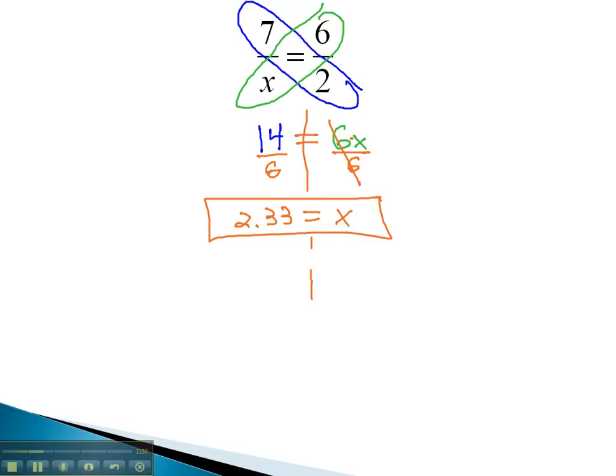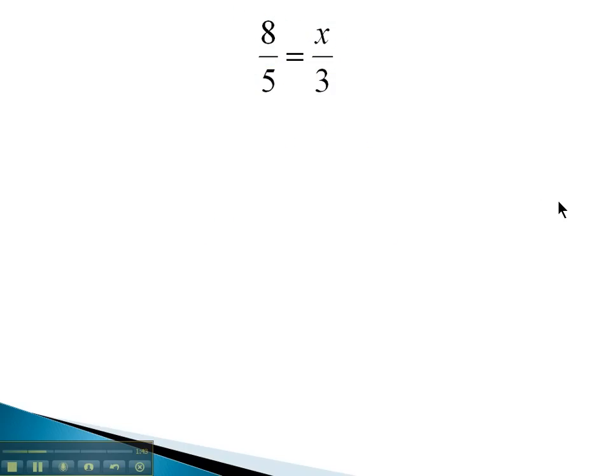Let's take a look at another example where we can use this cross product in order to solve a proportion for a variable. In this problem, 8 over 5 equals x over 3. Again, we will use the cross product and multiply the diagonals.